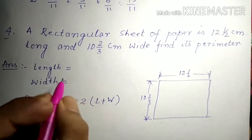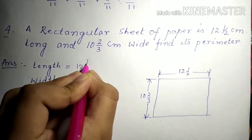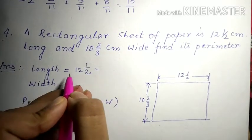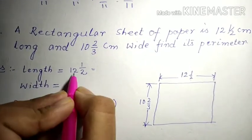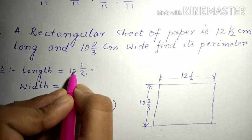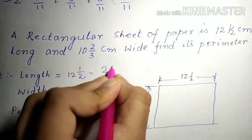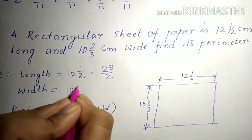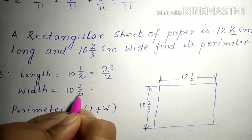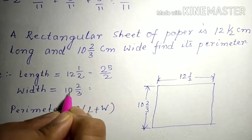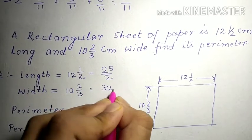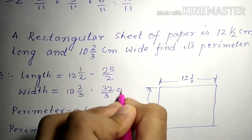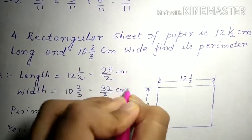So length is equal to, it is given that 12 1/2. So as it is given in mixed fraction we will convert it in improper fraction. So 12 into 2 is 24 and 24 plus 1 is 25/2. And breadth is given 10 2/3 is equal to, 10 times 3 is 30, 30 plus 2 is 32/3. So as it is given in centimeter we will write both of these in centimeter scale.